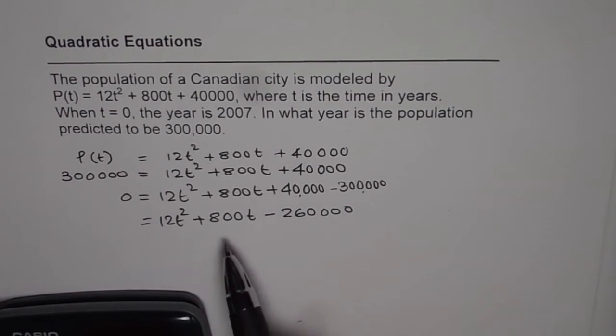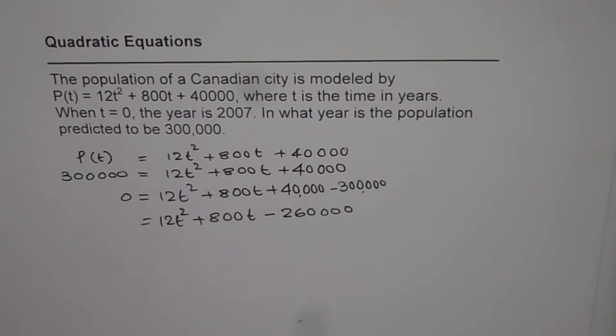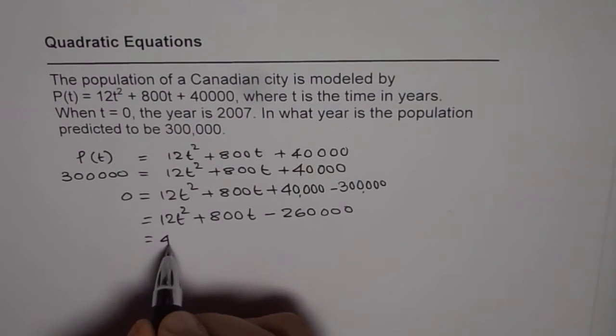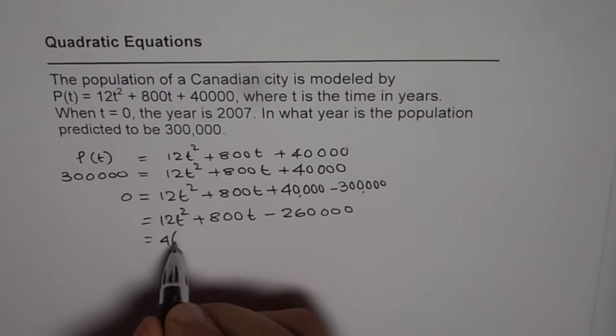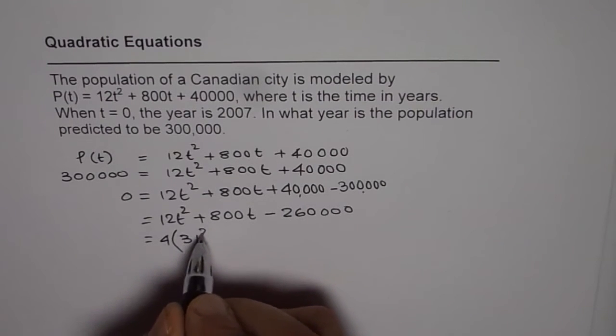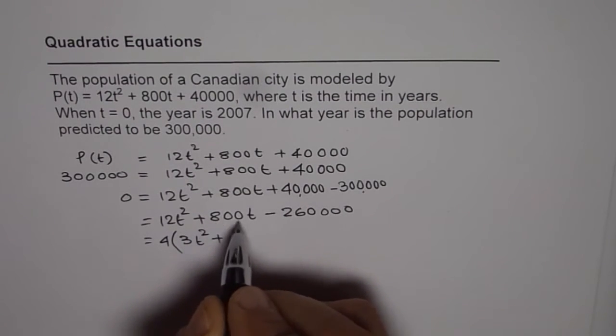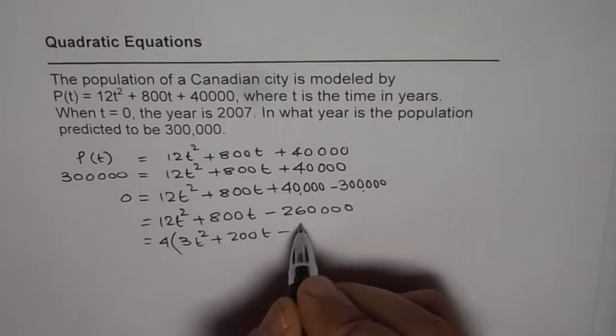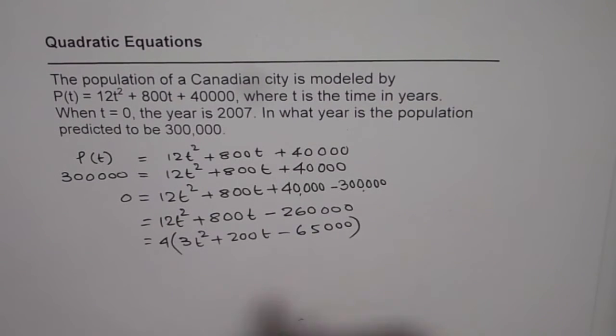We can divide all by 12 and then see what we get. Dividing by 12, that's a fraction. So let's avoid it. We could simplify it a bit. We could at least divide by 4. So let's divide by 4. Let's take 4 common. So if I take 4 common, I get 3t² + 200t - 65,000.